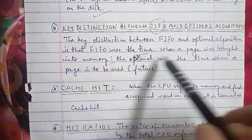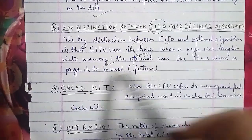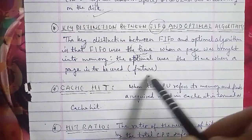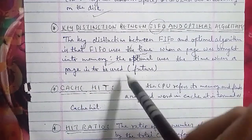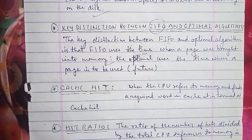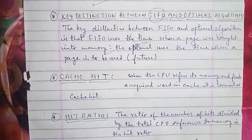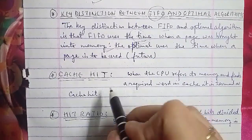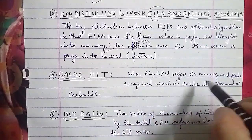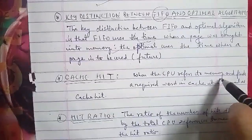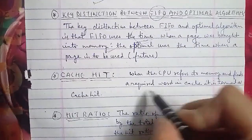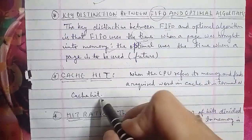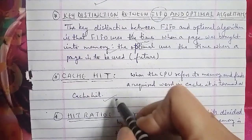Cache hit: when the CPU refers to memory and finds the required word in the cache, it is termed a cache hit.